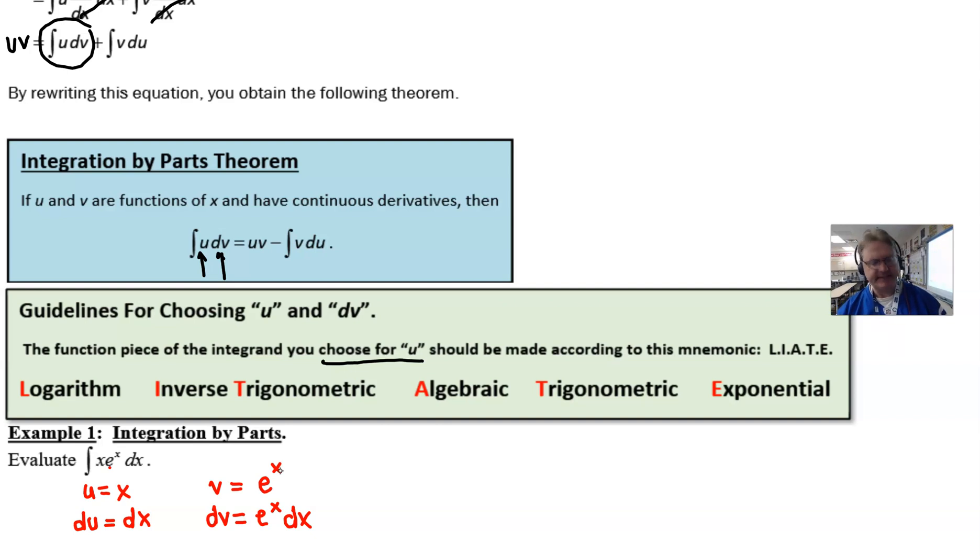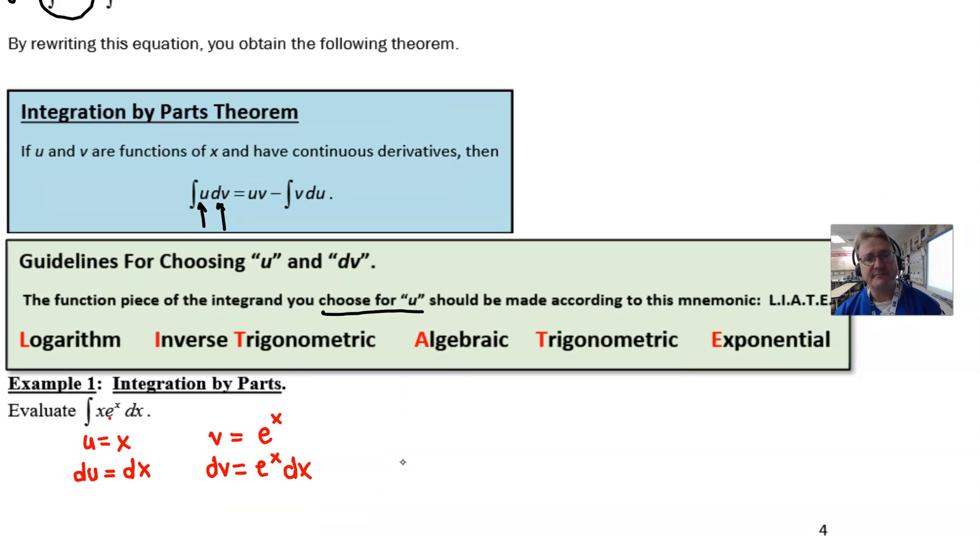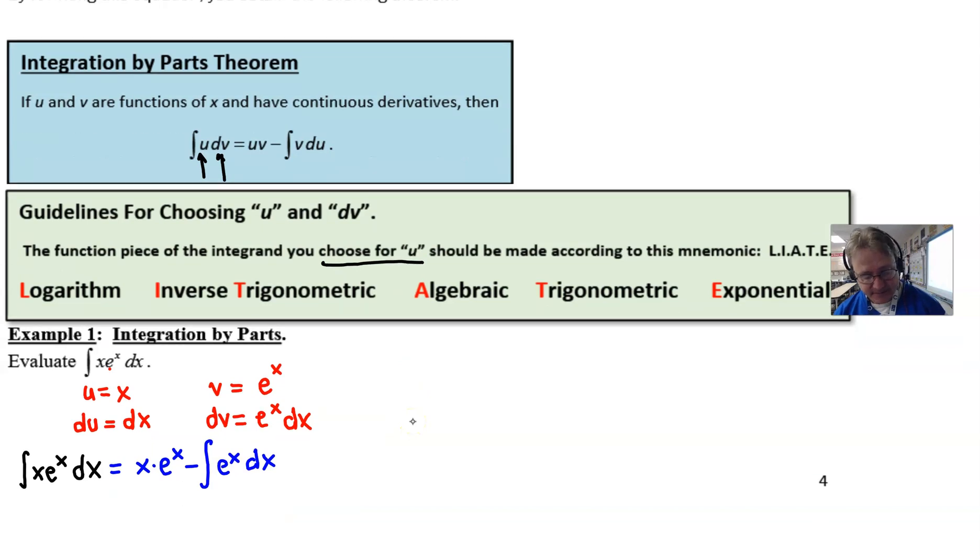All right. So we've got this table of u's and du's and v's and dv's. Now what? Basically, you can just write out the solution of the problem. Because you're just going to follow this formula. And there is really no need for you to write the problem again. I'm going to go ahead and write it just for emphasis here. The integration of x times e to the x with respect to x truly is equal to, and you just simply take u times v, which in this case would be x times e to the x. And then we subtract. And then we have an integral. And then it's v times the du. Well, in this case, the v is e to the x. And the du is dx.